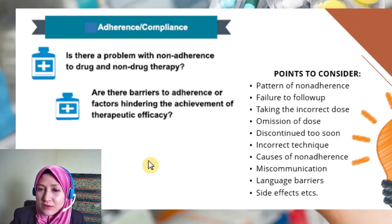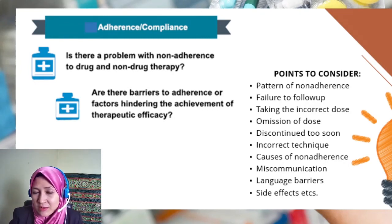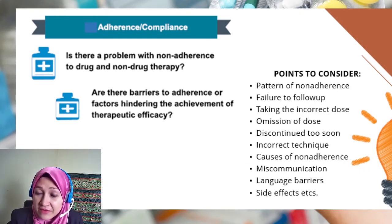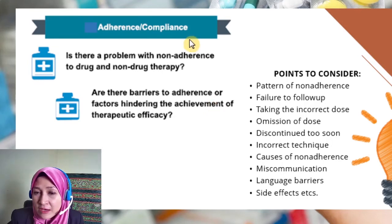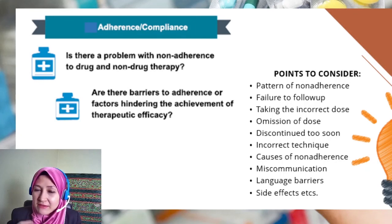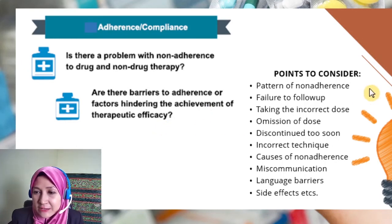Next is adherence or compliance, which is also a big component in drug-related problems. Is there any problem with non-adherence to drug or non-drug therapy? We need to evaluate patient adherence and compliance using several available tools. Are there barriers to adherence or factors hindering the achievement of therapeutic efficacy? Once we identify that the patient is non-adherent or non-compliant, we need to find out what the barriers to adherence are and what hinders them from achieving therapeutic efficacy.